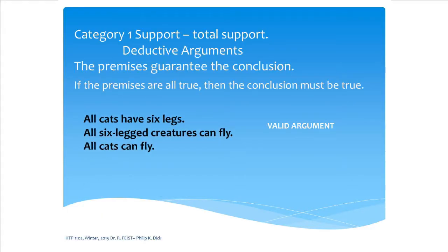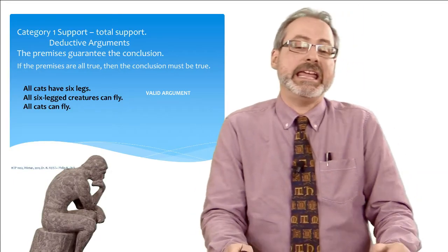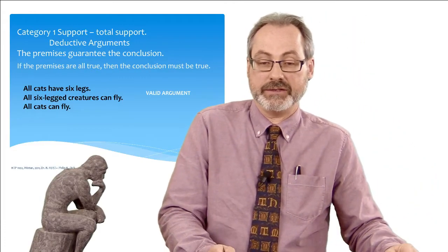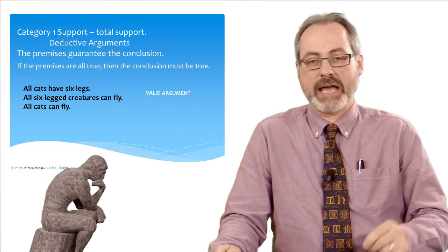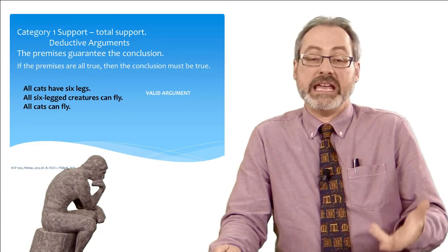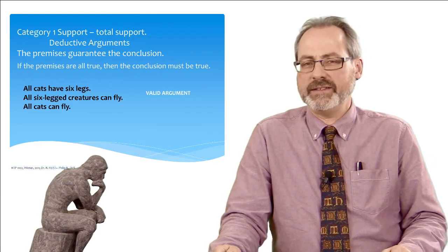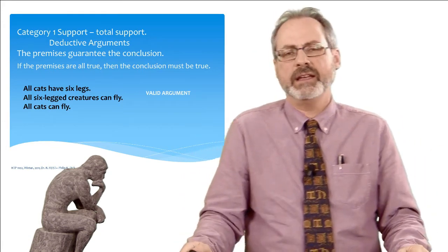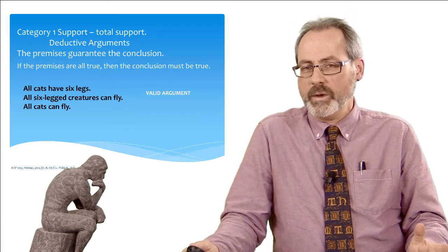Here's an example of a valid argument — an odd one, but useful. Premise one: all cats have six legs. Premise two: all six-legged creatures can fly. Conclusion: all cats can fly. Notice they're all false. However, if those premises were all true — if it were the case that all cats have six legs is true, and all six-legged creatures can fly is true — then it would be the case that all cats can fly. So this is a valid argument: if the premises are all true, the conclusion must be true. If you accept the premises and deny the conclusion, you're basically contradicting yourself.